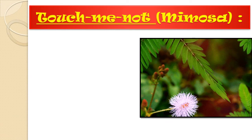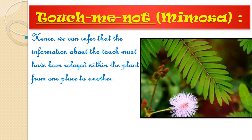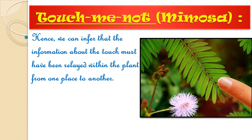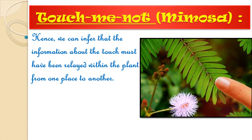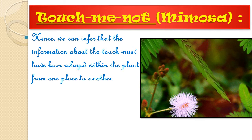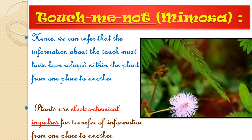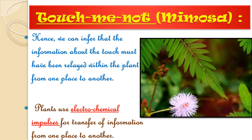The touch-me-not plant, or Mimosa plant, closes its leaves when touched. Movement also occurs at places other than where it has been touched, which tells us that information about the touch is relayed within the plant from one place to another. Plants use electrochemical impulses to transfer information from one place to another, and change their shape by increasing or decreasing their water content to bring about movement.